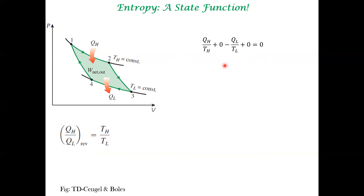Why are we writing this in this manner? Because there are four transformations involved in the Carnot cycle. Two of these transformations involve heat transfer — isothermal heat transfer — involving QH and QL. Two of the transformations are adiabatic, so there is no heat transfer there. You are therefore placing zero here and zero here, corresponding to the two adiabatic transformations.